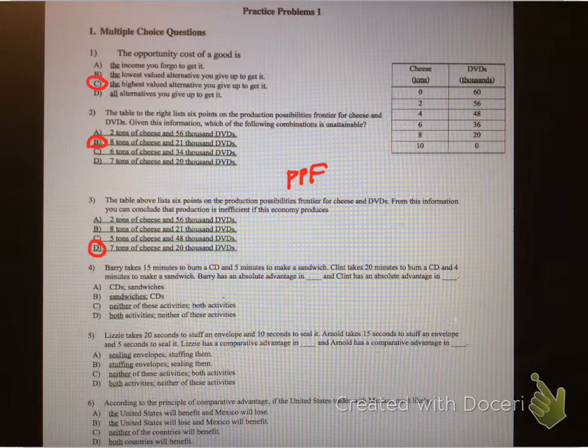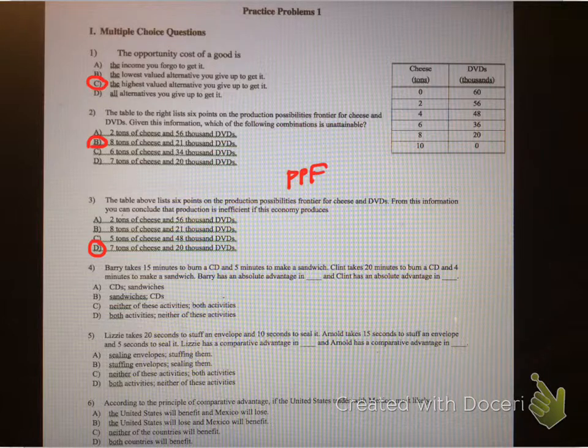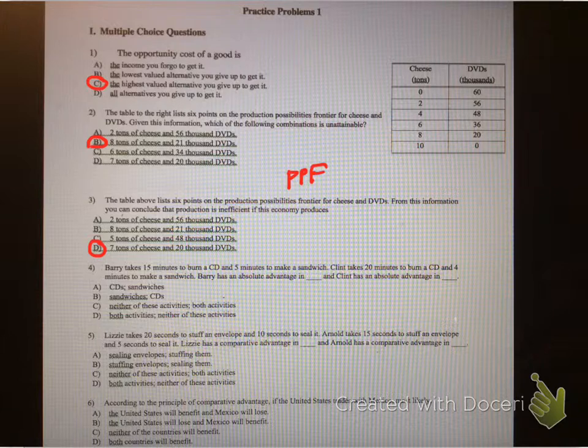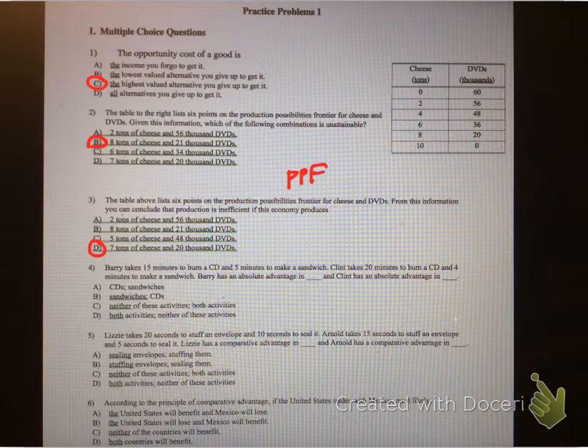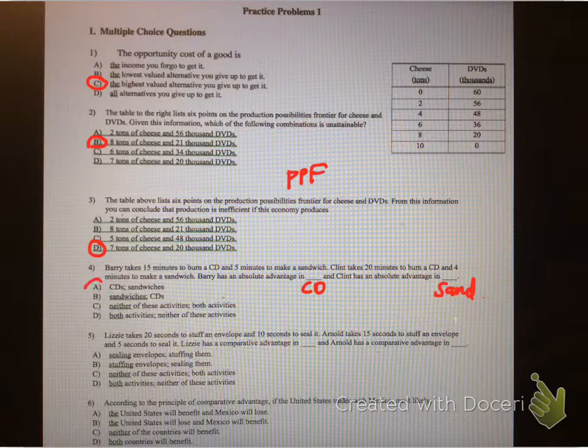Okay, so the next one. Barry takes 15 minutes to burn a CD and 5 minutes to make a sandwich. Clint takes 20 minutes to burn a CD and 4 minutes to make a sandwich. So Barry has an absolute advantage in what? Well, the first thing I would kind of do is look at what are the comparisons. So CDs and sandwiches. So who can make the CDs the fastest? That could be your first question. Whoever makes it the fastest has an absolute advantage in this case, because they each have an absolute advantage over each other, but you just gotta figure out which one, in which subject. So, if Barry takes 15 minutes to burn a CD and Clint takes 20, Barry makes it faster, so he has an absolute advantage in CDs. So that means Clint would have it in sandwiches. Now you look at the answer choices. Oh look, it's the first one, A.